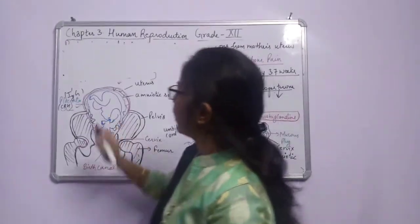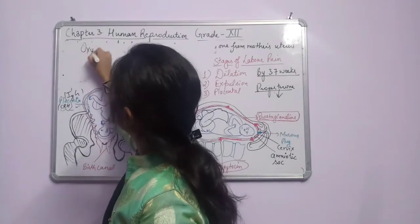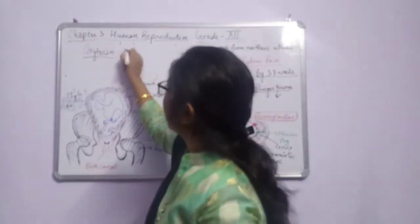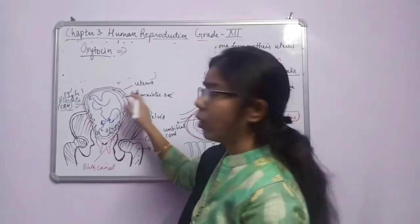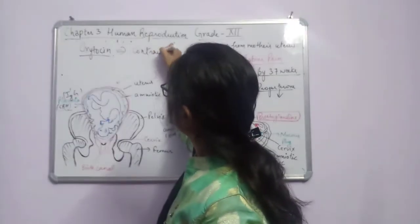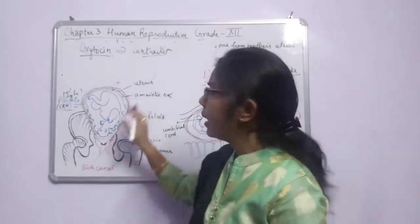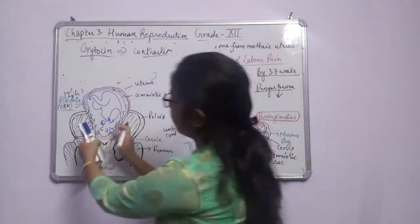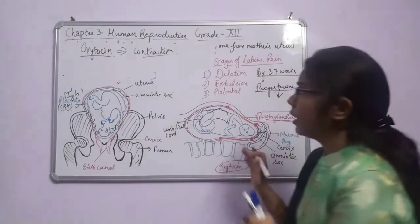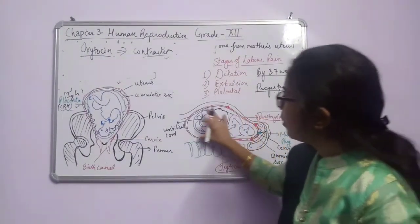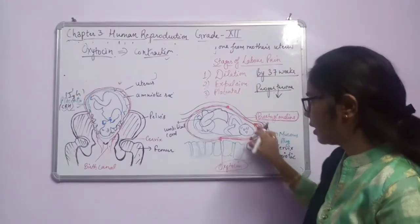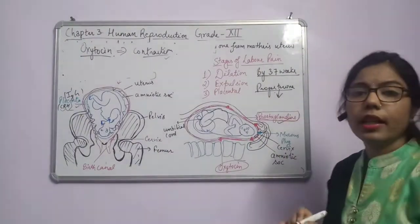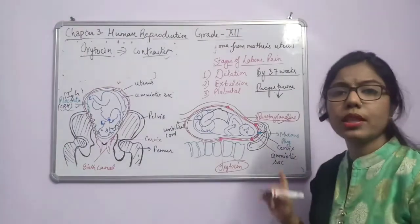During this time, oxytocin hormone comes into play and causes contraction of the endometrium lining. Along with oxytocin, due to this contraction, the membrane surrounding the fetus also contracts, which causes secretion of another hormone — prostaglandins.